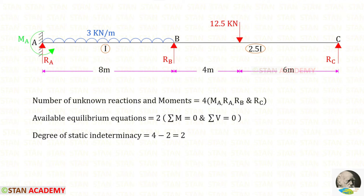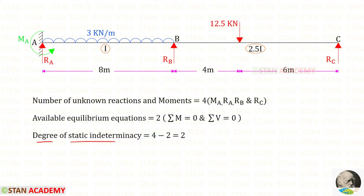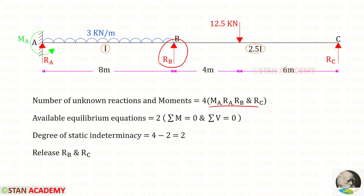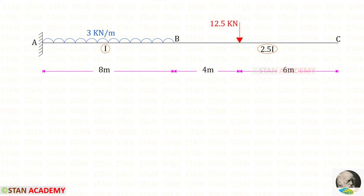Now let us find the degree of static indeterminacy. The number of unknown reactions and moments are 4, and the available equilibrium equations are 2. So the degree of static indeterminacy is 4 minus 2, which equals 2. From these 4 unknowns, we have to release any 2. One should be RB because support B has sinking. In this case, we are going to release RB and RC. When we release RB and RC, the continuous beam becomes a cantilever beam.